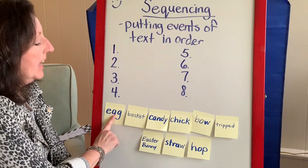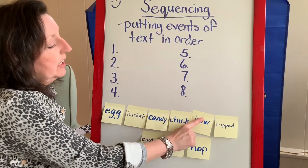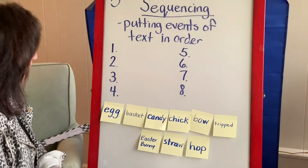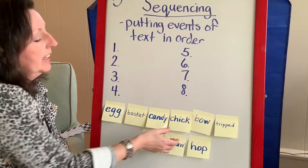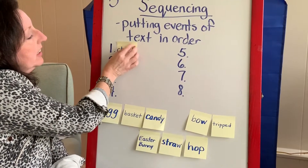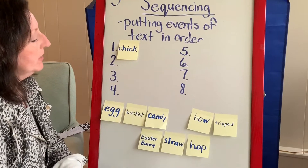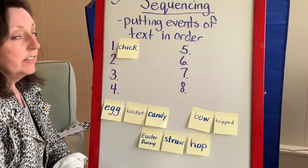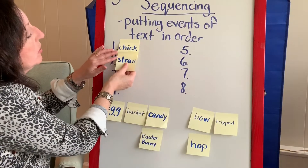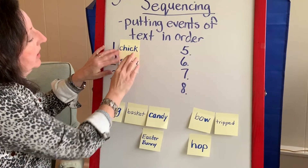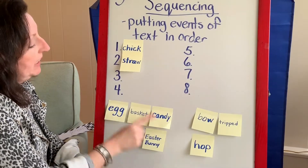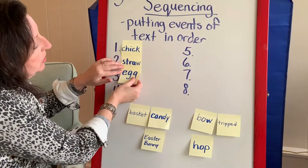Let's think about what the first thing was — if it was the egg, the basket, the candy, the chick, the bow, she tripped, the Easter bunny, the straw, or the hop. Let's think about what happened first. You're right, it was the chick — she swallowed a chick. Now let's think about the second thing that happened. I bet you got it right: she swallowed the straw. That was the second thing she swallowed. Let's think about the third thing — I bet you said egg. Egg was the third thing that she swallowed.